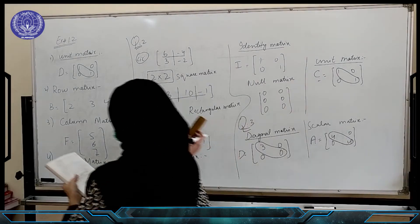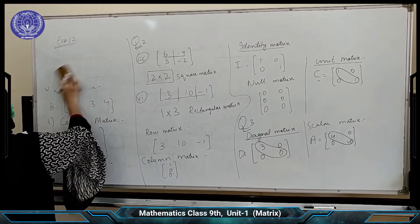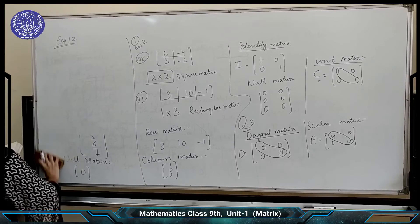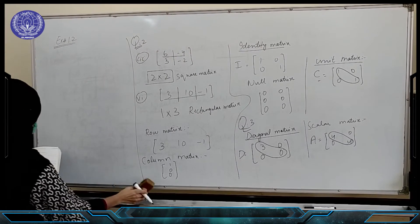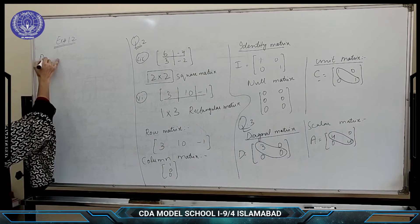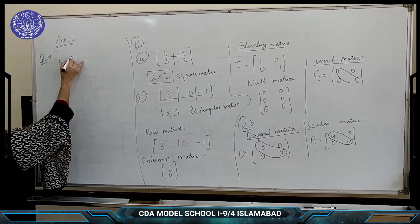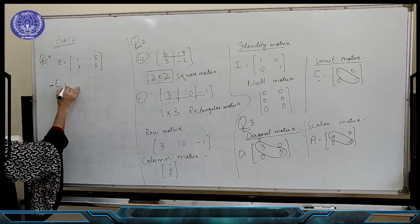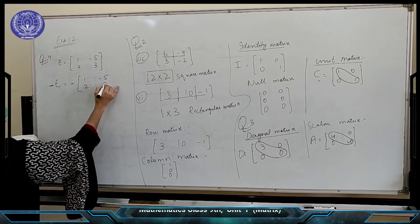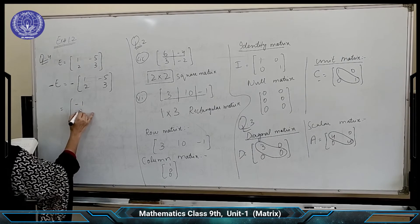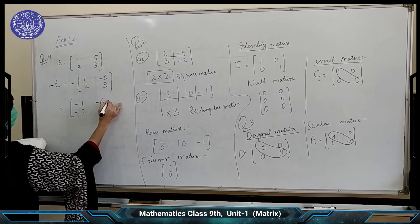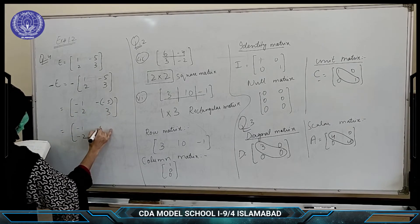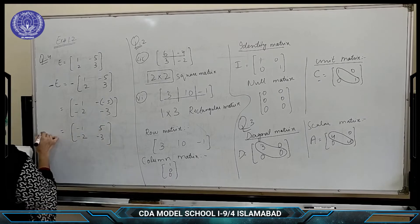Now question number 4 is: find the negative of the matrix. In the negative of a matrix, we simply multiply with a negative sign the given matrix. Consider matrix E: 1, 2, minus 5, 2. We find the negative: minus 1, minus 2. Here the minus sign is already present, so minus into minus 5 gives plus 5. So minus 1, minus 2, plus 5, minus 2. This is the negative of the matrix.